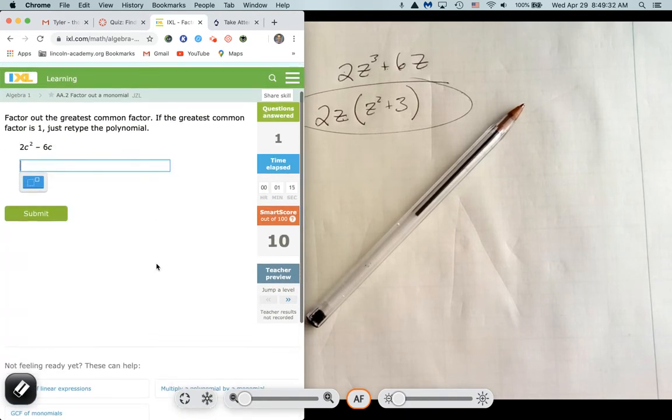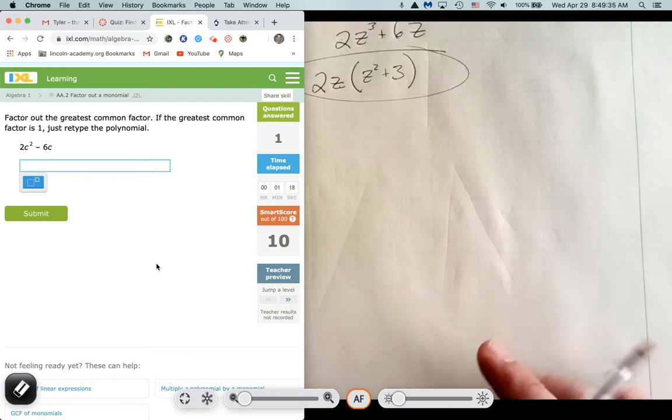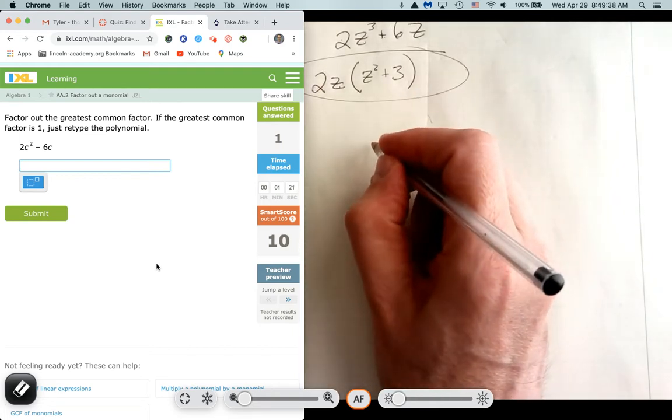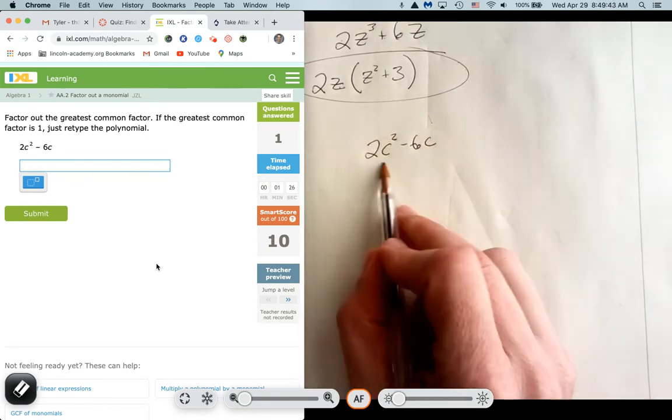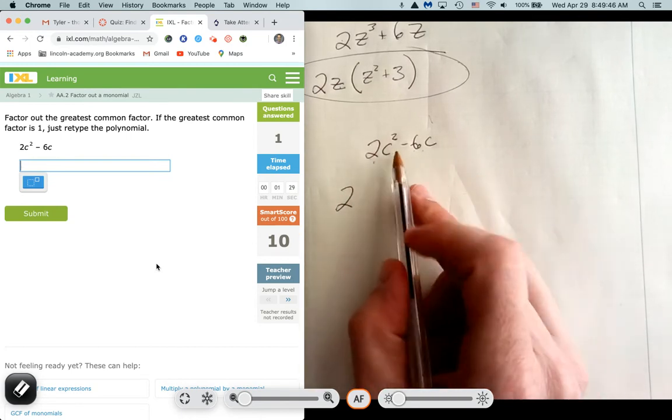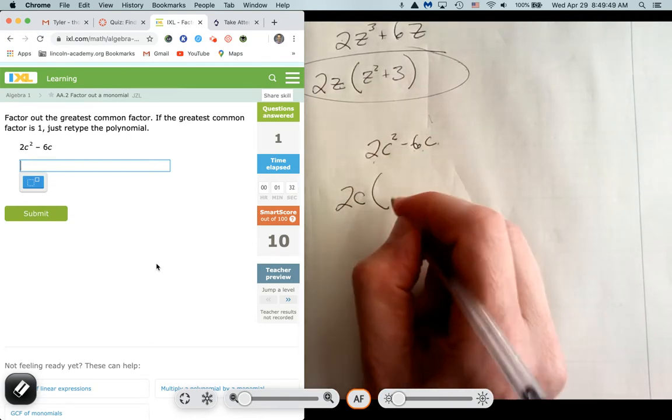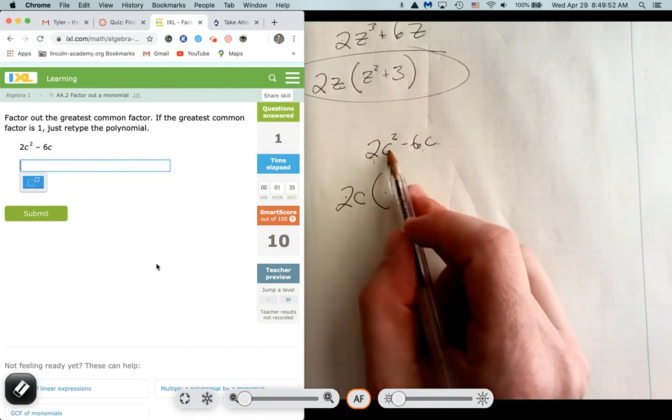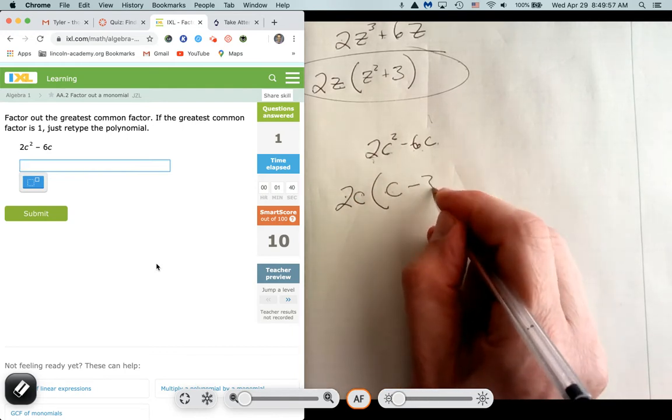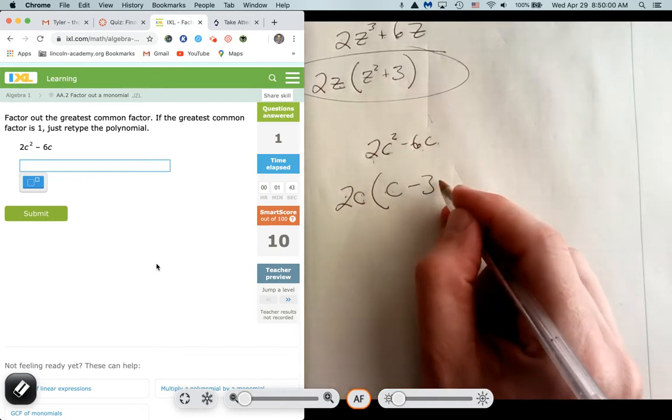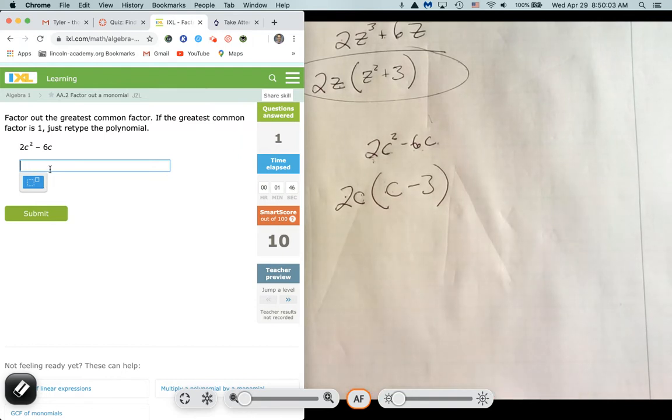So you just type it in, making sure you hit the right variables. z squared plus 3 and submit. So I want you to do this a few times. I'm going to assign this lesson because I want you to get in the habit of the very first thing you always do is you look for anything that's in common with both terms. Both terms are even again. So I factor out a 2. Both terms have a c. So I factor out the c, leaving 2 divided by 2 is 1, c squared divided by c leaves 1c, 6 divided by 2 is 3. So I have a minus 3. The c cancels. And we get this expression right here. So we get 2c outside the parentheses and c minus 3 inside the parentheses.